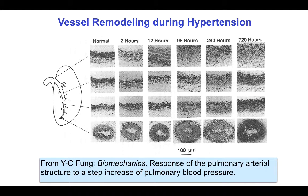Arteries grow and remodel when the blood pressure increases. In the lung, this can be achieved quickly by subjecting the animal to low oxygen or hypoxia. Note that after the pulmonary artery pressure rises, the arterial wall starts to thicken within 12 hours, and this continues over the next week or two.